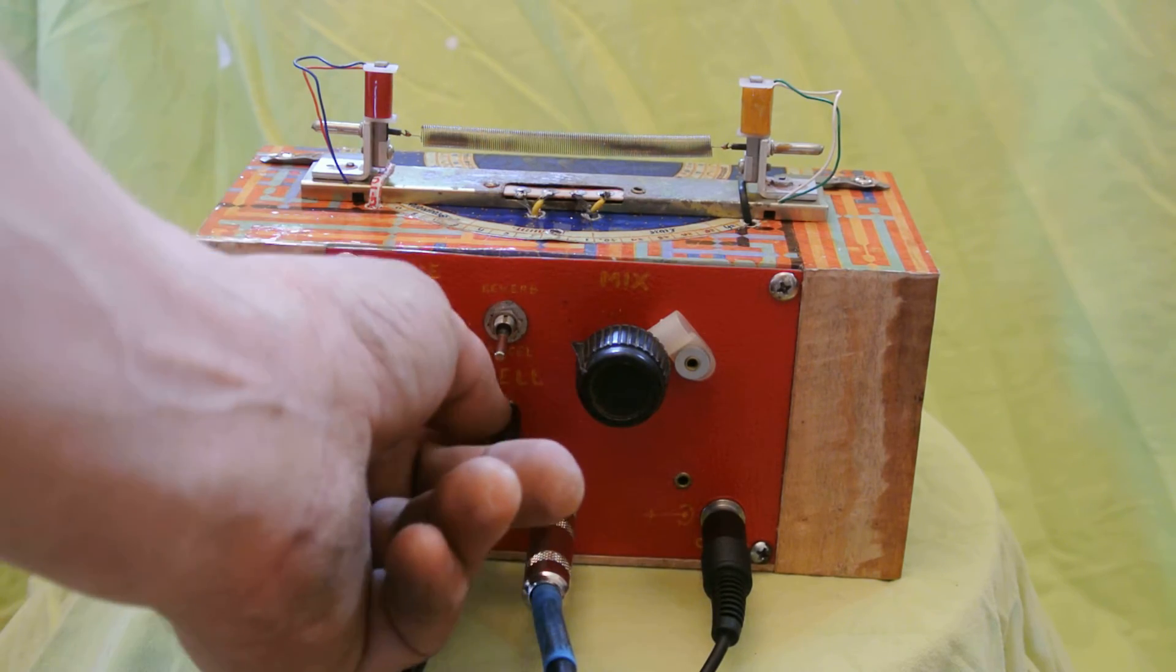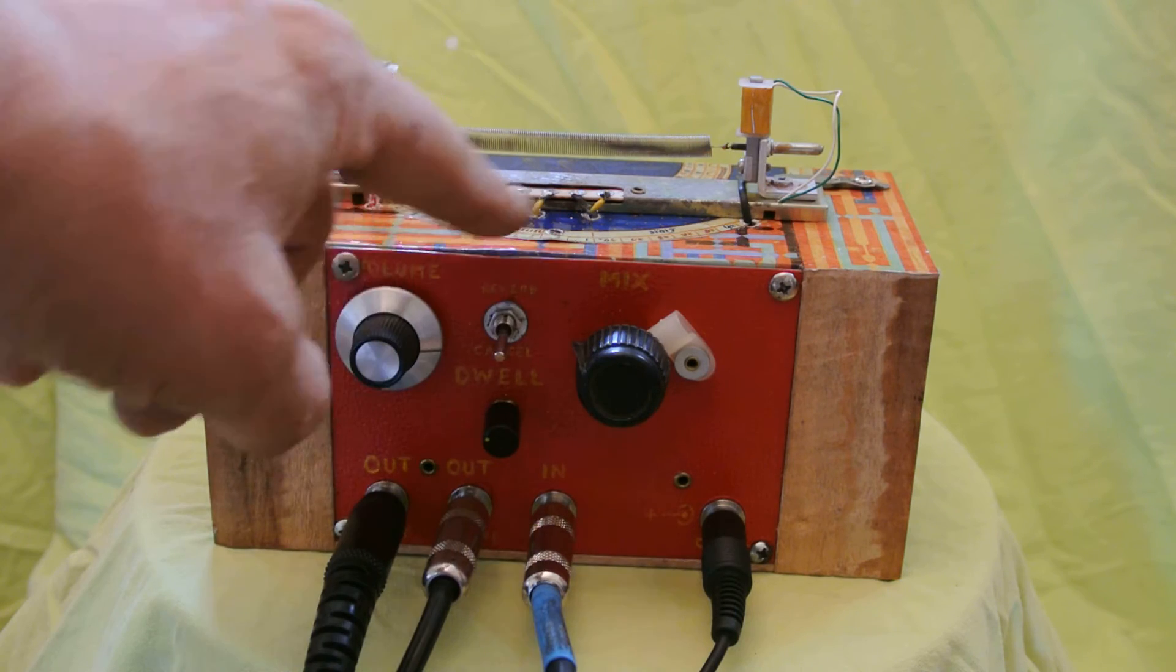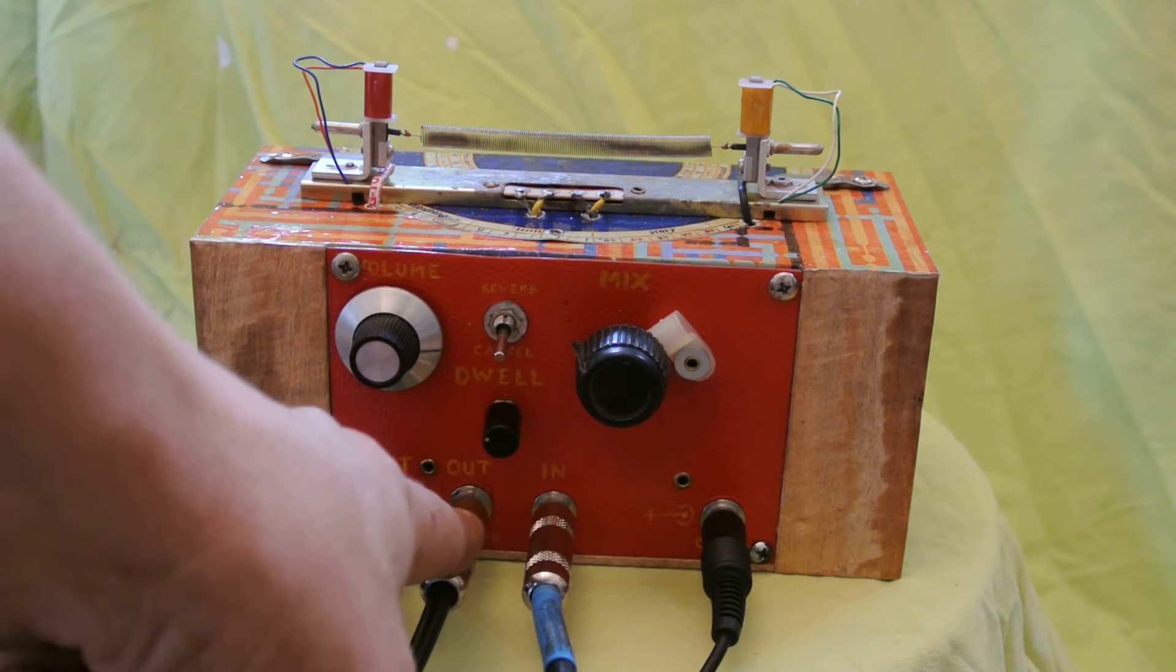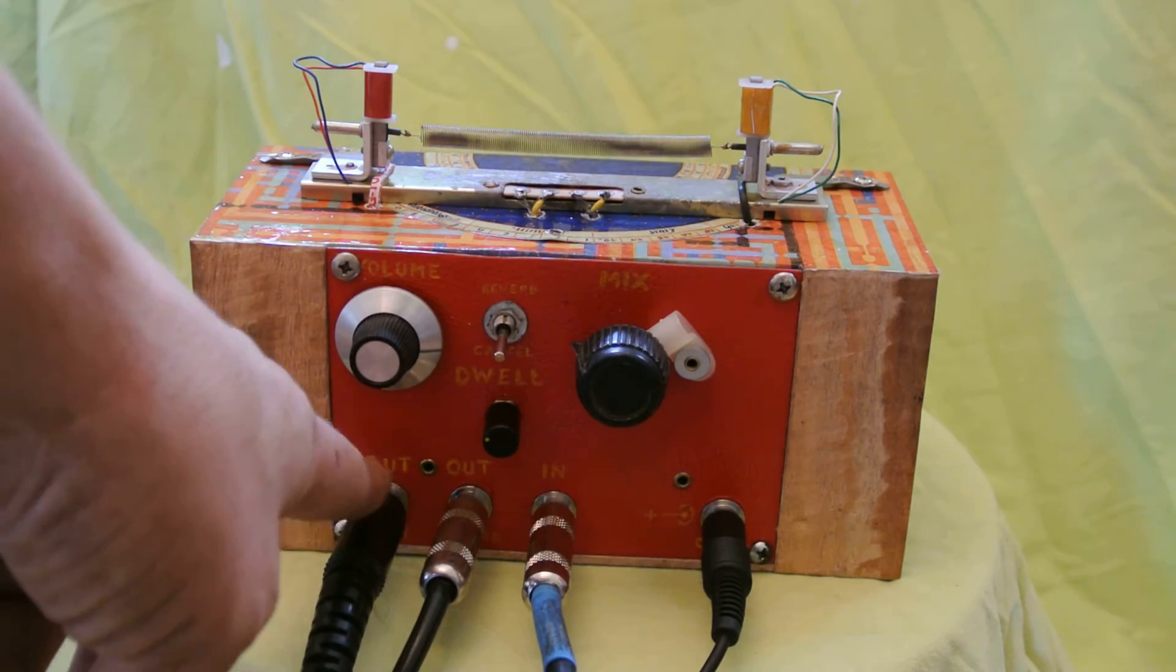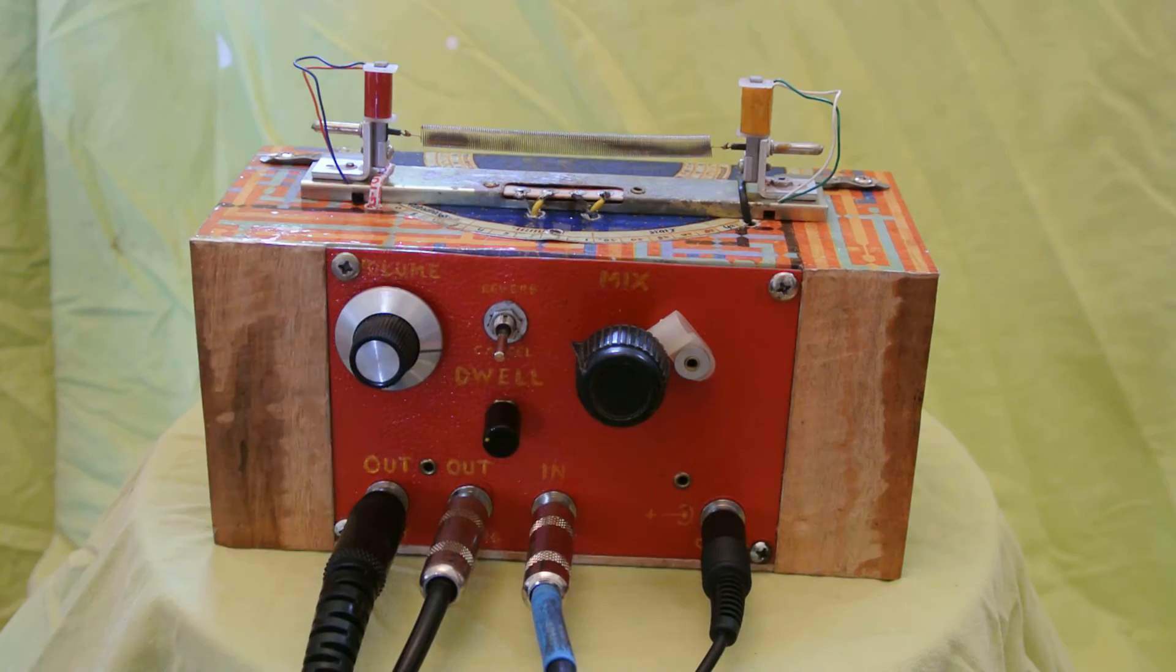We have a dwell control right here. It looks like a button, but it's actually a control. We have a reverb cancel switch here. And we have input, output for reverb, and a dry out. And here we have the power supply.